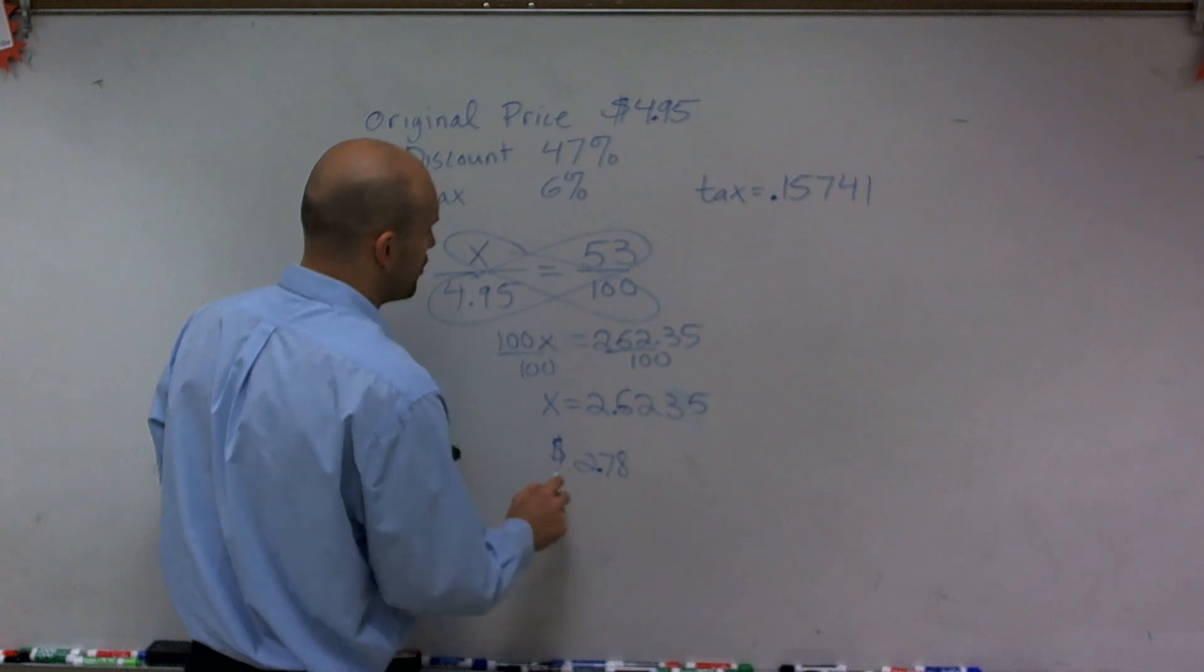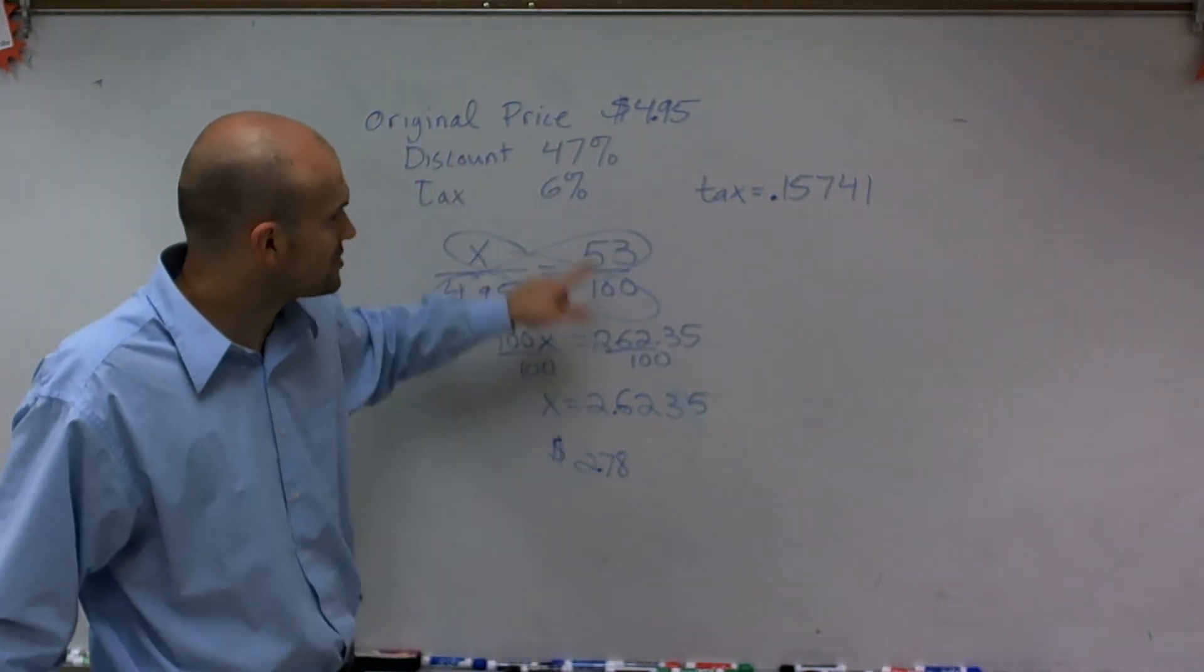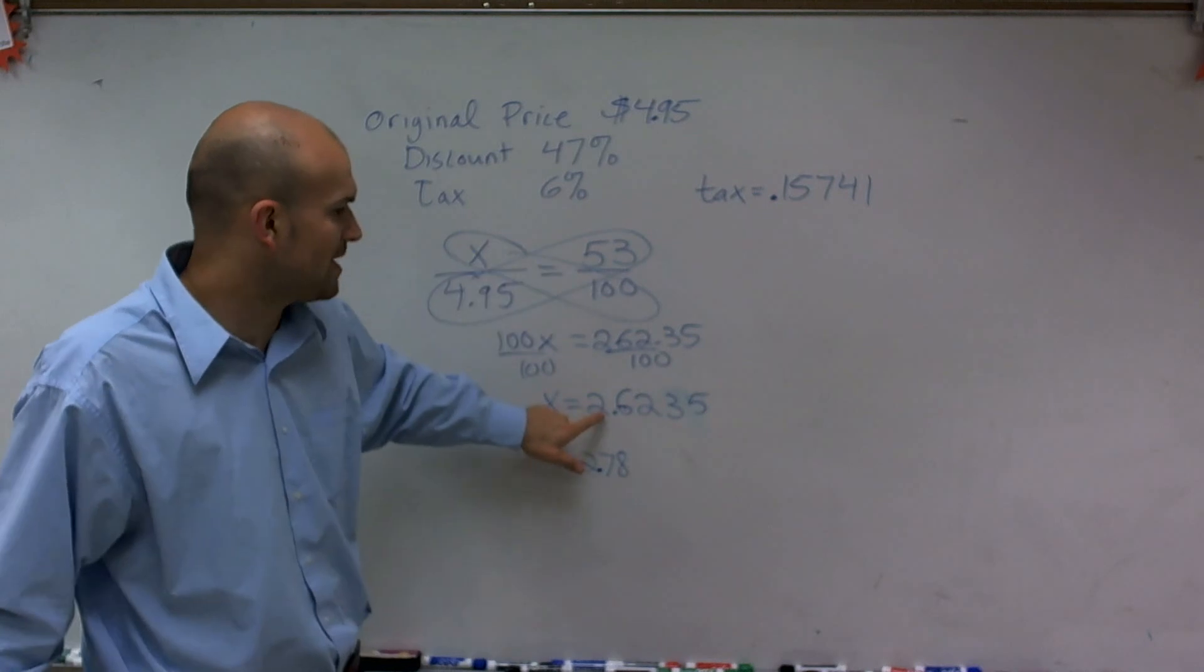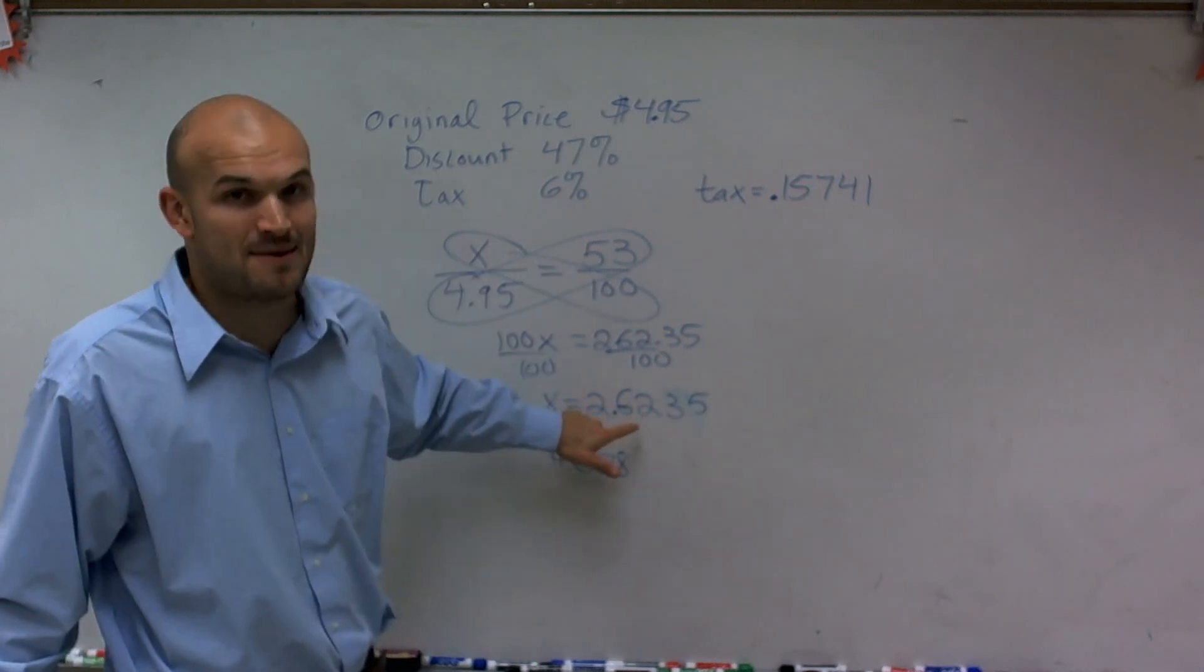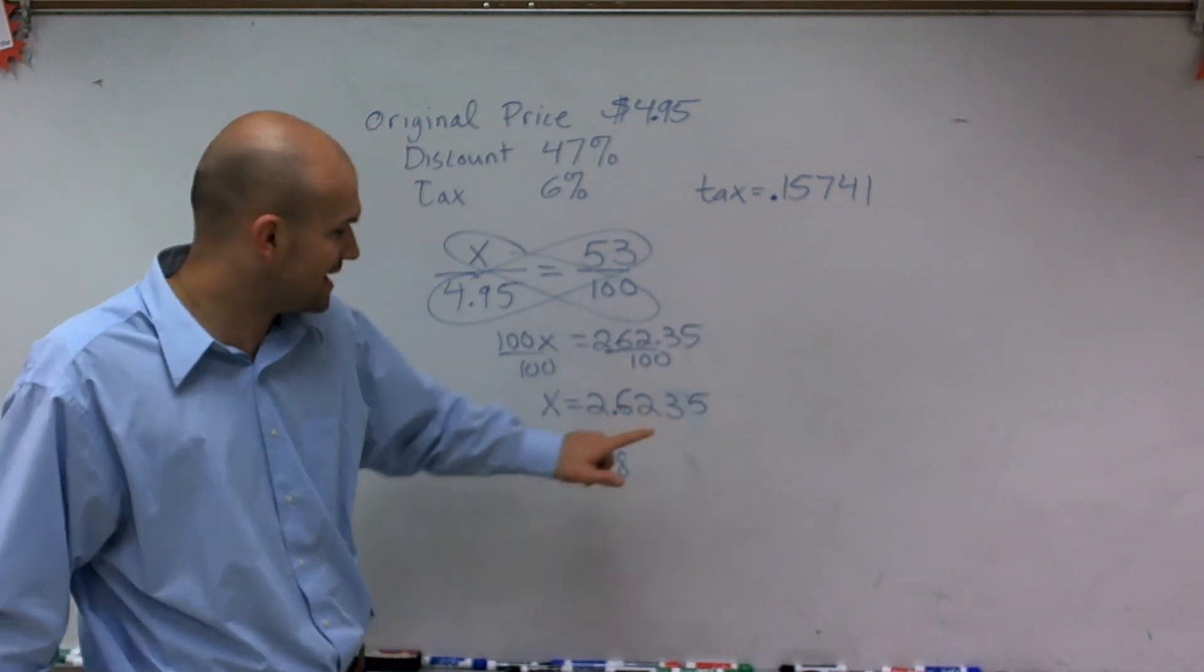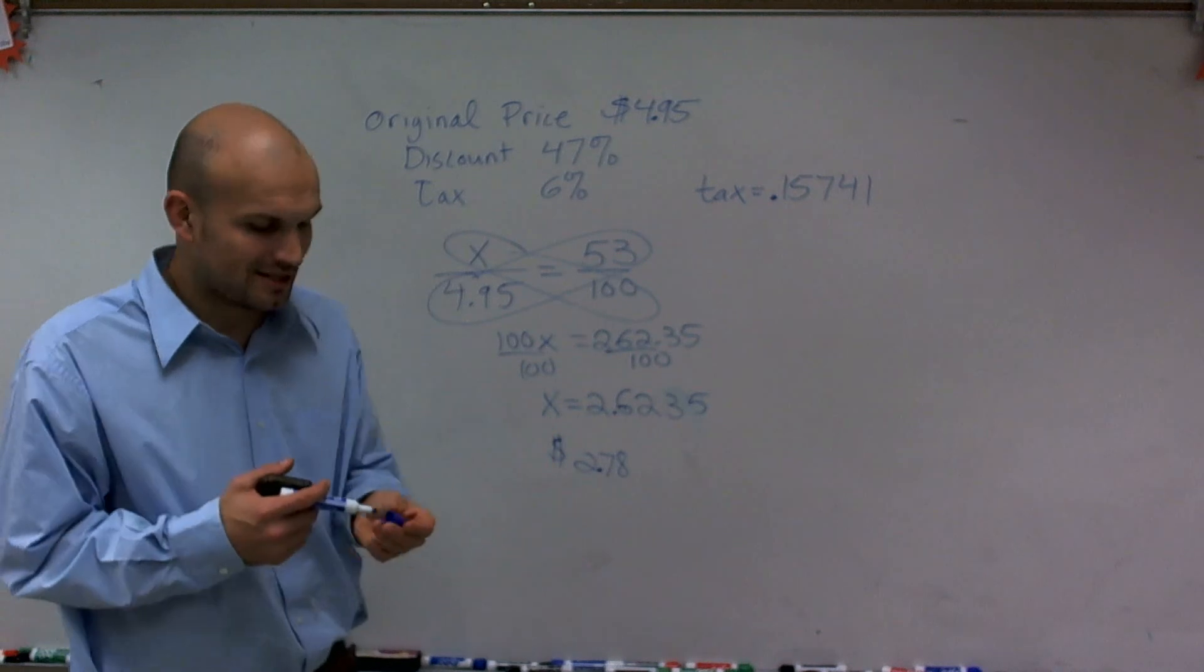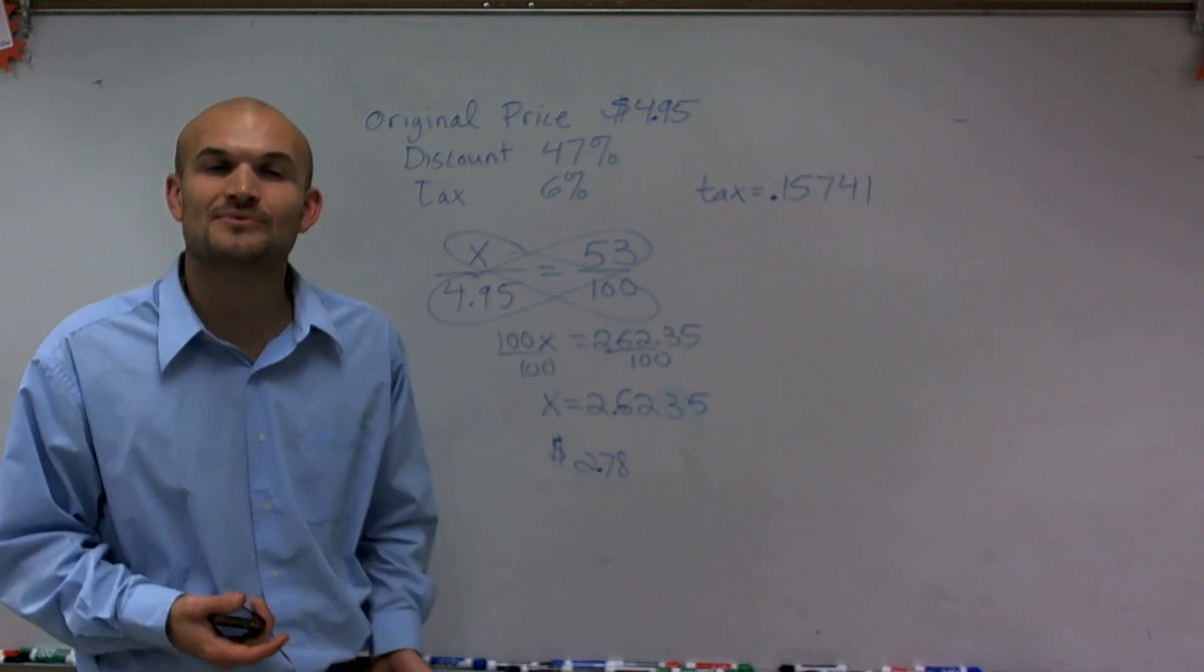Therefore, the amount of tax I'm going to pay is 6%. I take .06, multiply it by the amount I'm getting my game at a discount, and add the amount of tax to how much I'm paying for the game to get my final price of $2.78. So there you go, ladies and gentlemen. That's how you add tax with a discount. Thanks.